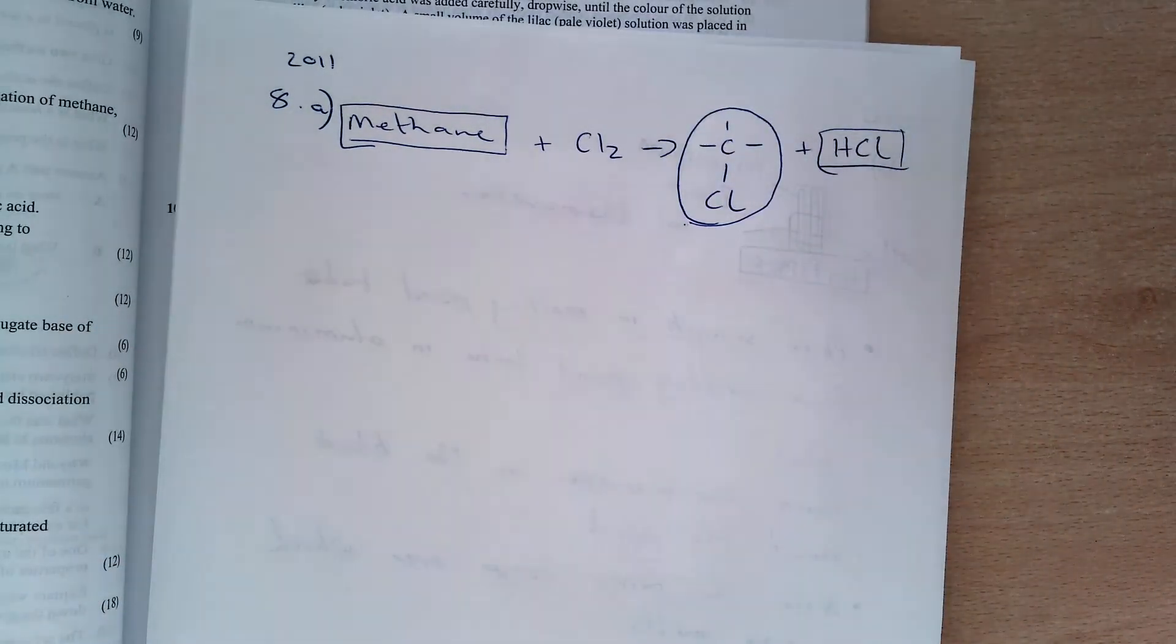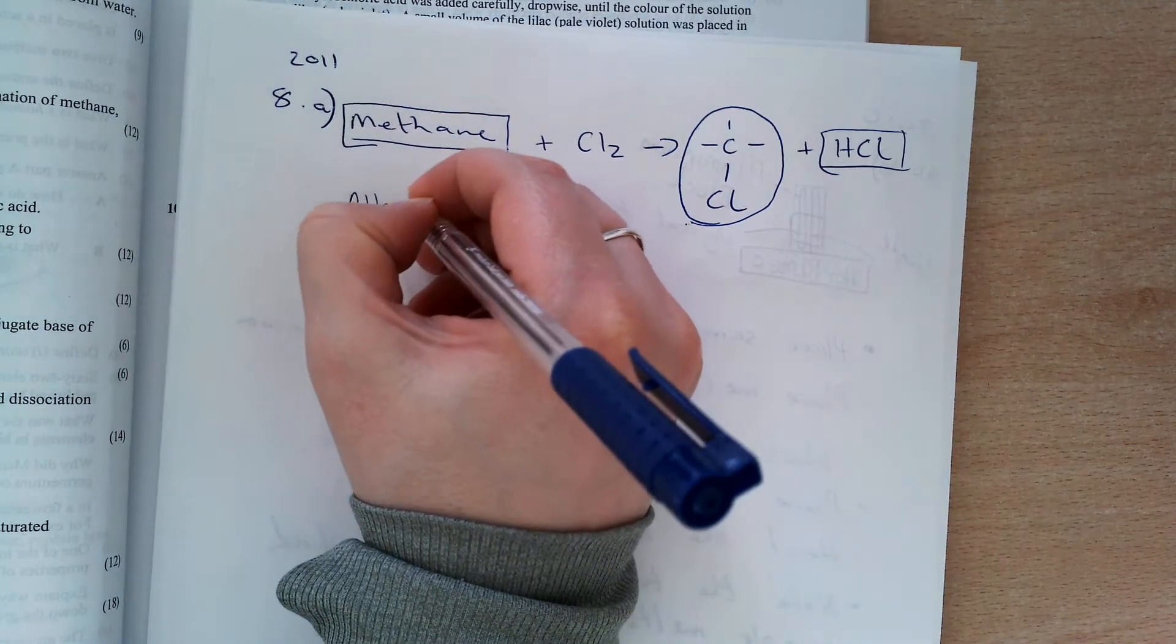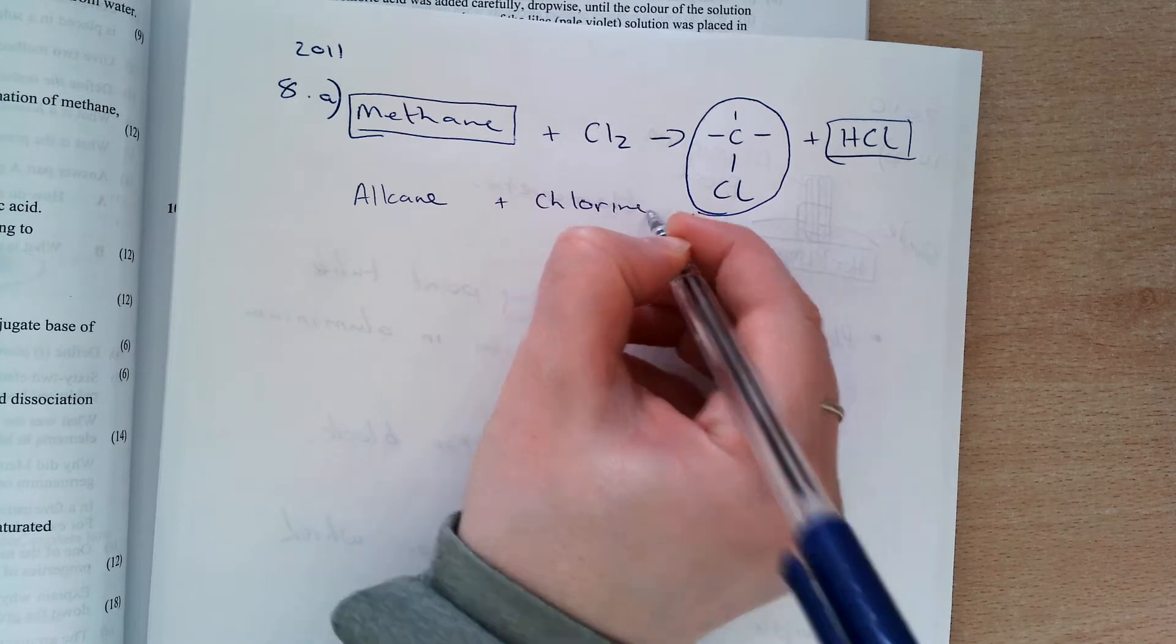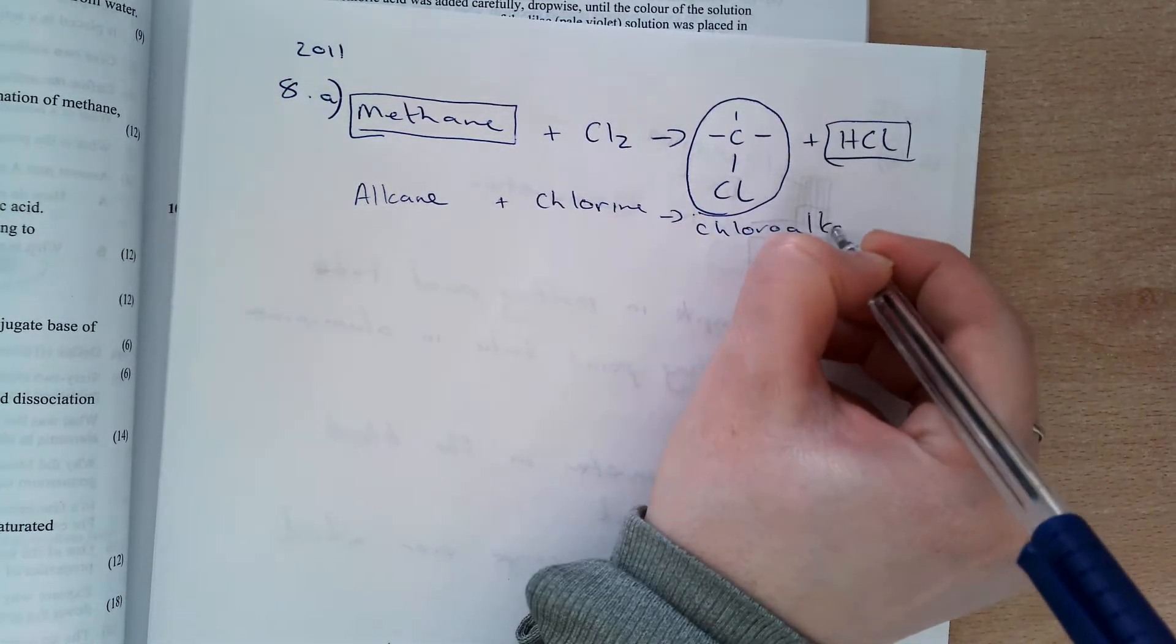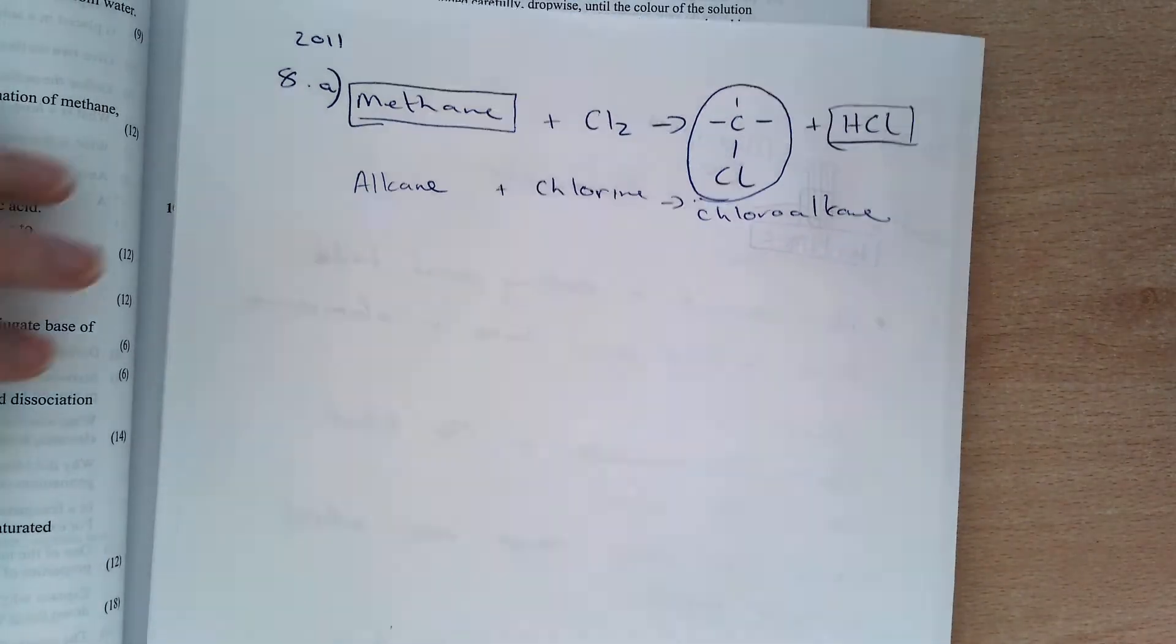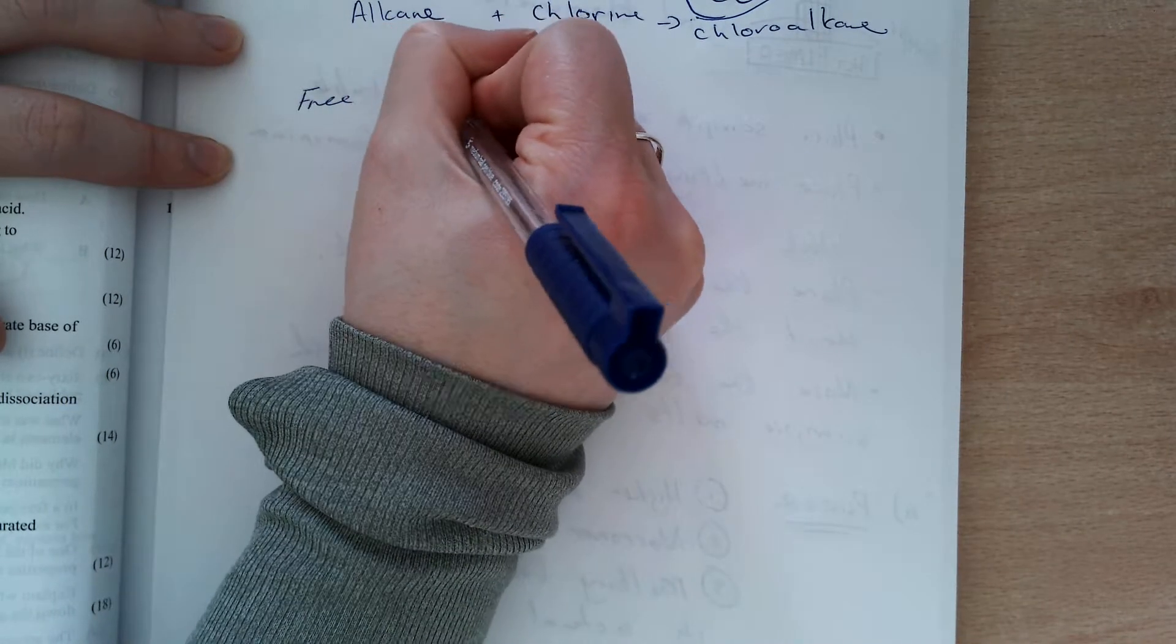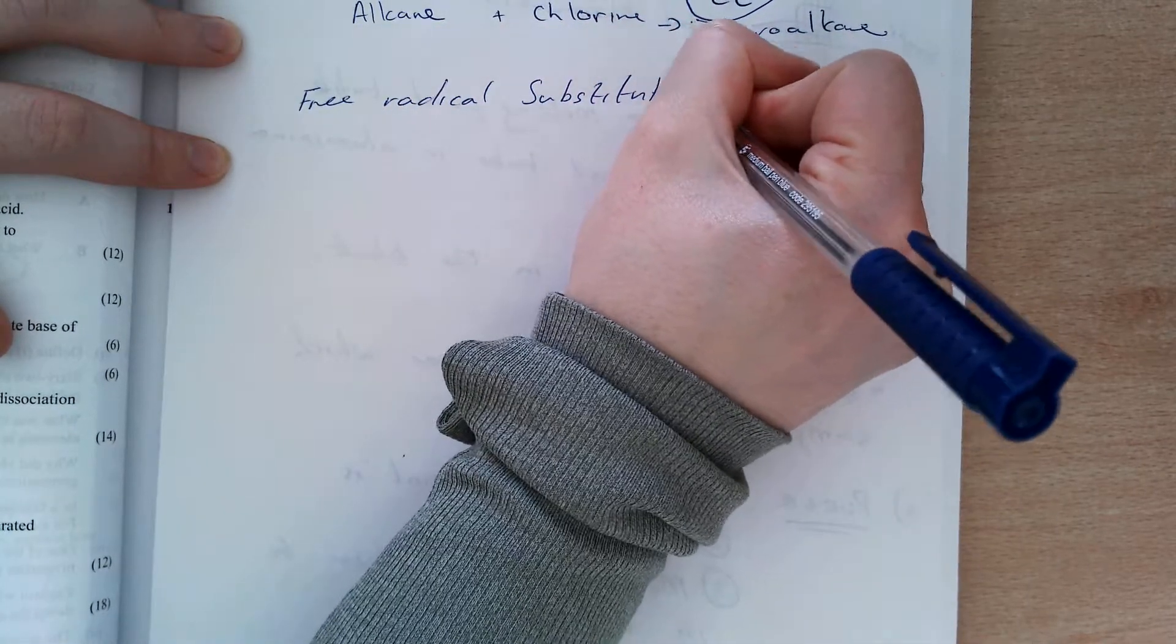You have to recognize this is an alkane, and I'm adding chlorine to make a chloroalkane. That means you need to recognize it is a free radical substitution reaction.